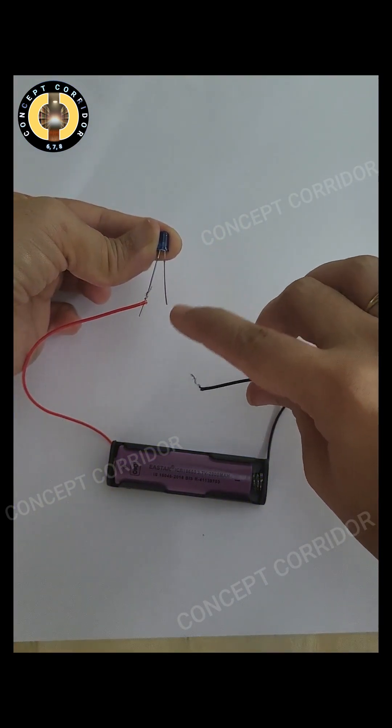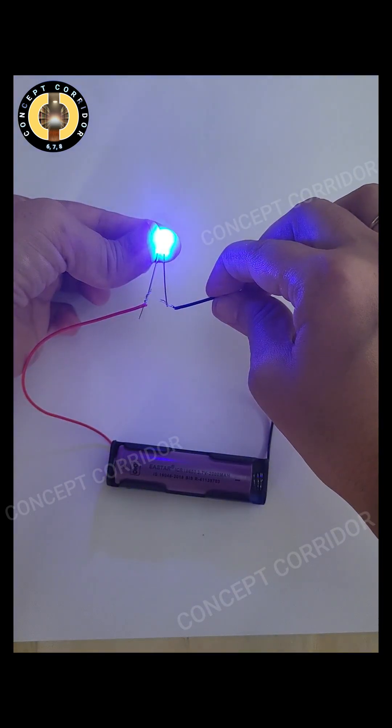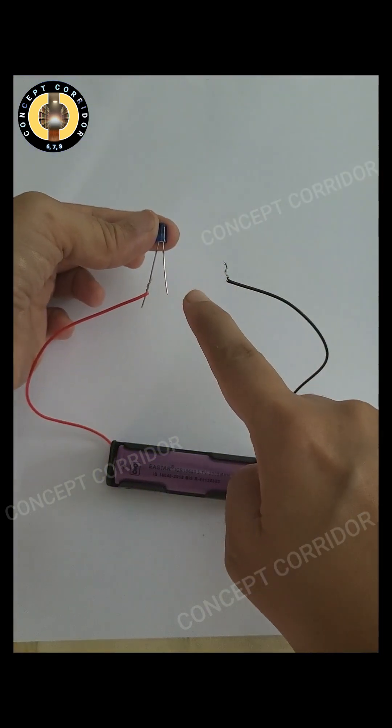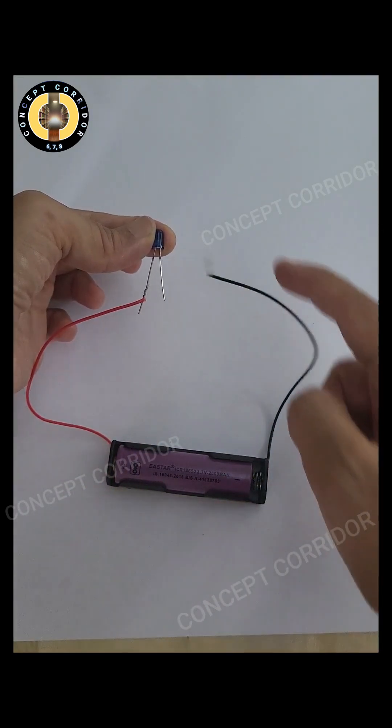What you can infer from this? In LED, the current flows only in one direction, that is from positive to negative. So, you need to join LED in the correct sequence for current to flow.